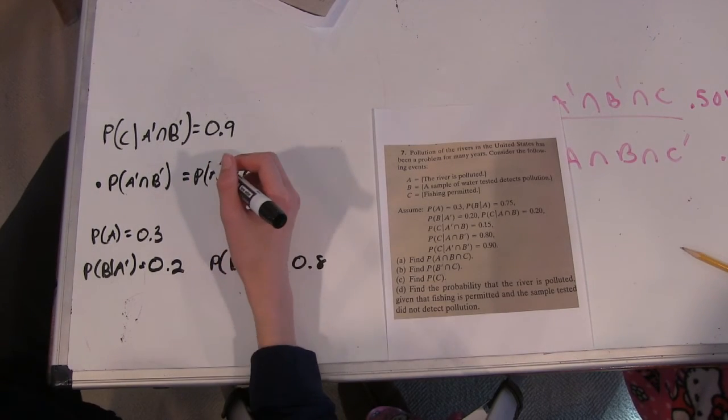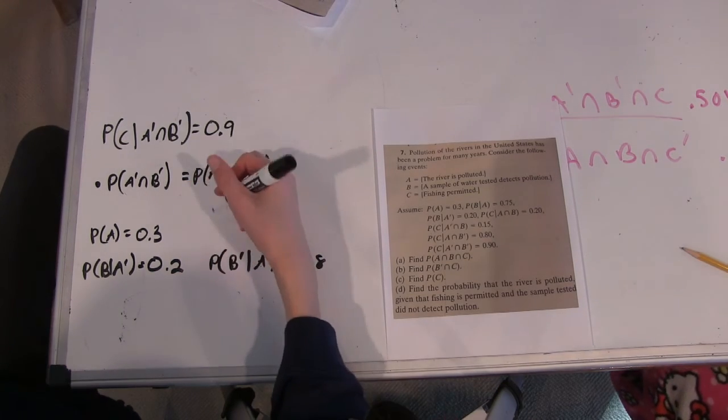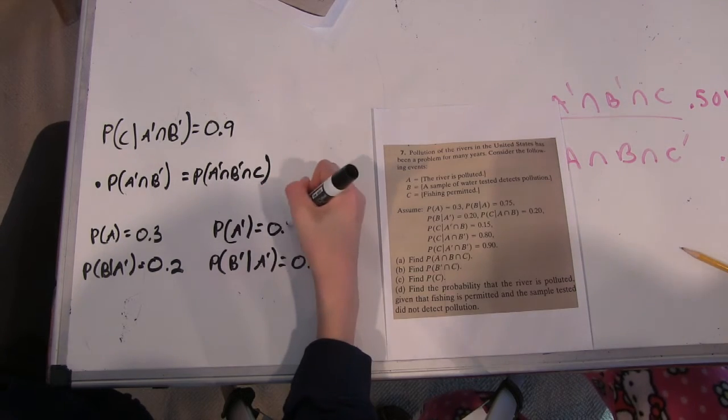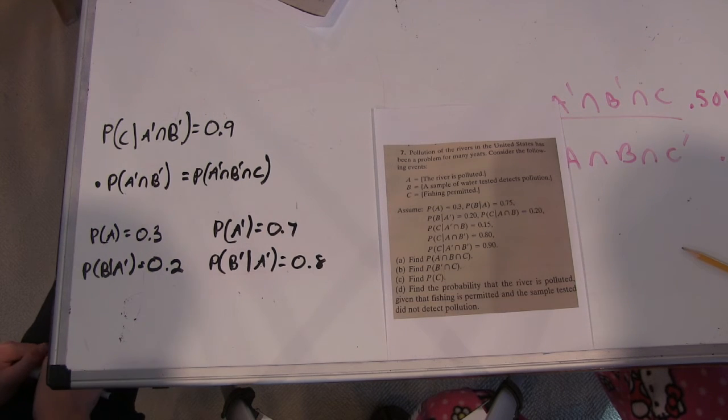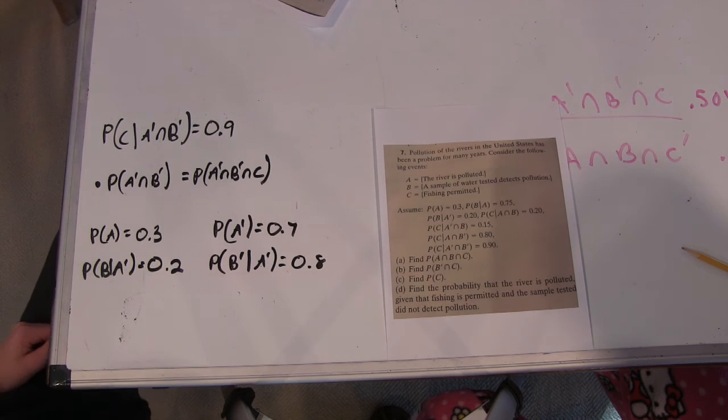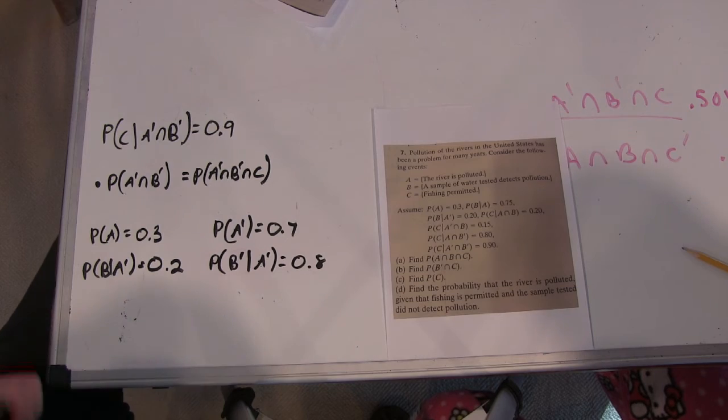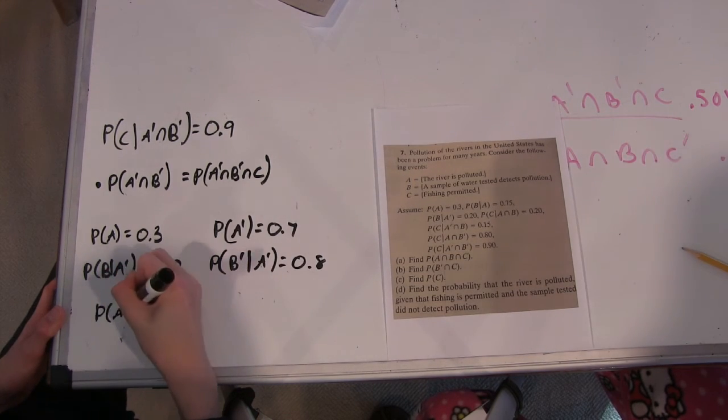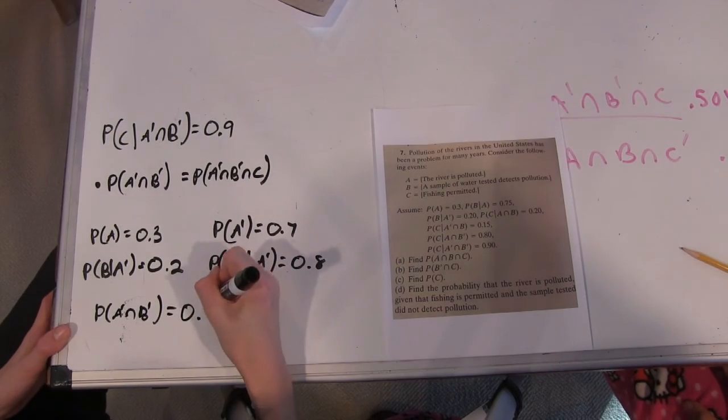And then for the same method we can deduce that the probability of A prime is 0.7 because it also has to, it's the only other outcome for the event A. And so how we get A prime intersect B prime is multiplying these two probabilities. So we get the probability of A prime intersect B prime is 0.7 times 0.8, which is 0.56.